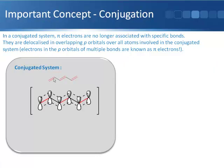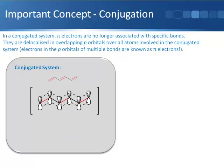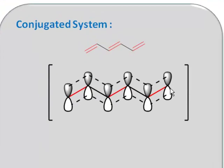Each of the carbon atoms in this chain are sp2 hybridized. Therefore, they all have one of these unchanged p orbitals on them. So if you draw all those in, you'll get this scenario here.